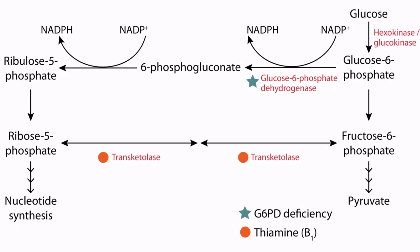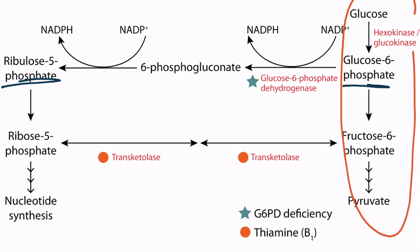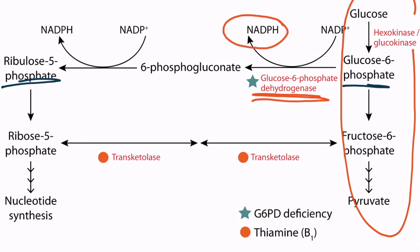This is a detailed figure of the HMP shunt, which can be found in section 10 of Metabolism. There are several reactions in this pathway, but you really only need to be familiar with a couple of steps. Notice that glucose 6-phosphate is shunted away from glycolysis in order to produce ribulose 5-phosphate. One of the enzymes involved in this conversion is glucose 6-phosphate dehydrogenase, or G6PD. This enzyme is incredibly important because it's responsible for the production of NADPH, and it's the rate-limiting step of the HMP shunt.